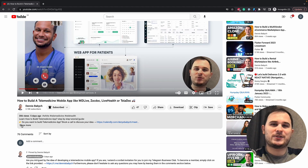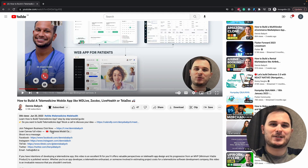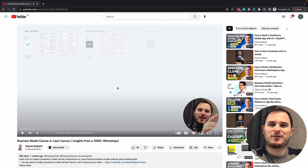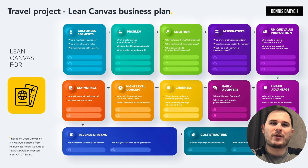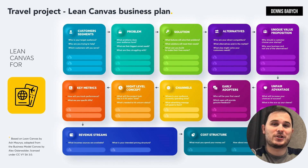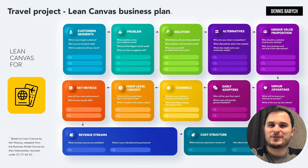If you're interested in learning more about Lean Canvas, I've created a full video — link in the description. Remember, don't just think about the present. Plan for the future and envision global growth and international expansion of your platform. Having a clear vision for your app's future in five or ten years is crucial for attracting investors and achieving unicorn status.